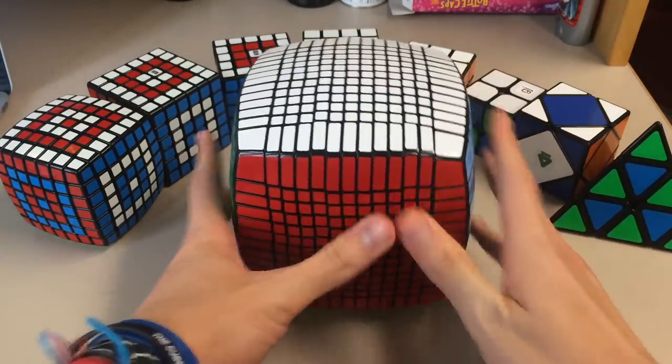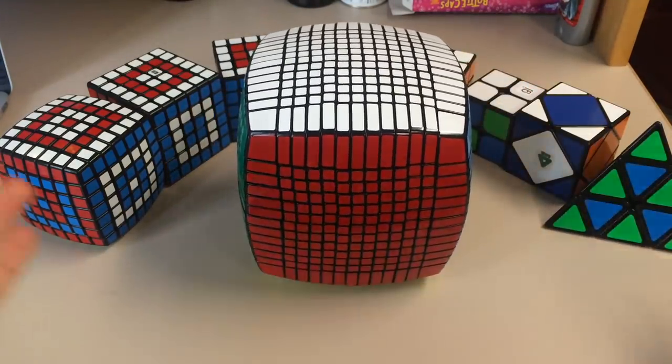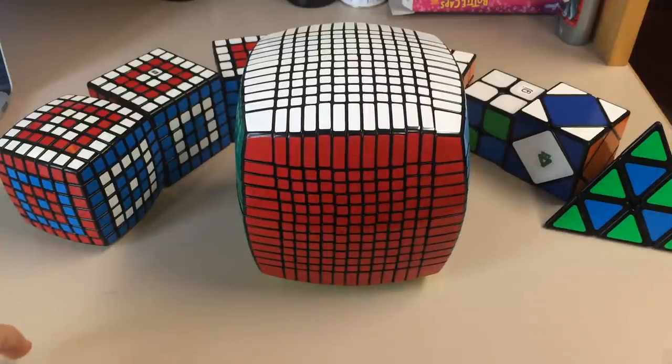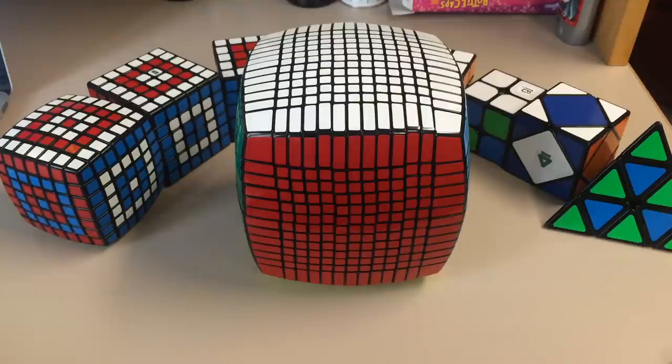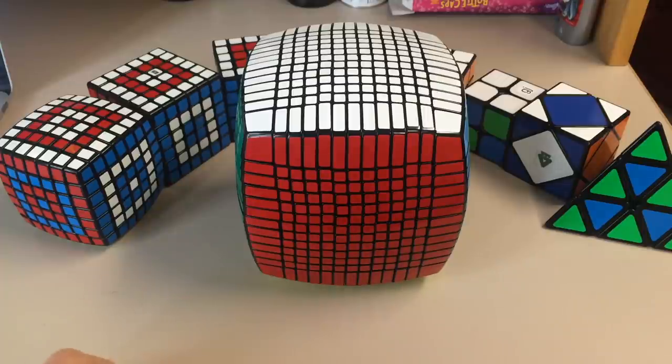And so anyways, this cube, I bought it from thecubicle.us, or my parents did, and they bought it unstickered. It wasn't really a surprise, I knew it was coming because they needed some help with the ordering process. But it came unstickered because that was cheaper, and because I was going to re-sticker it with my shades anyways.